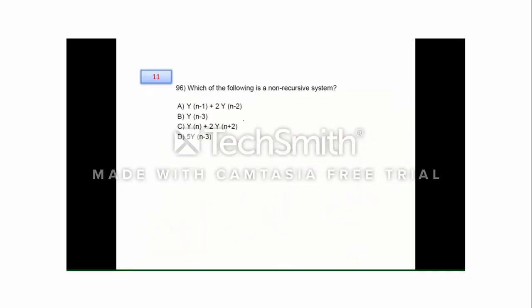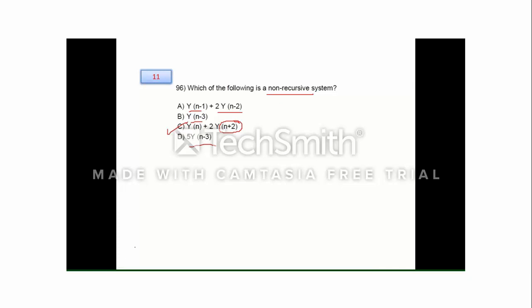Question number 11: which of the following is a non-recursive system? A non-recursive system depends on forward (future) values rather than past values. Options 1, 2, and 4 depend on past values, while option C has an output that depends on a future value of the input. Therefore, option C (number 3) is the correct answer for question number 11.